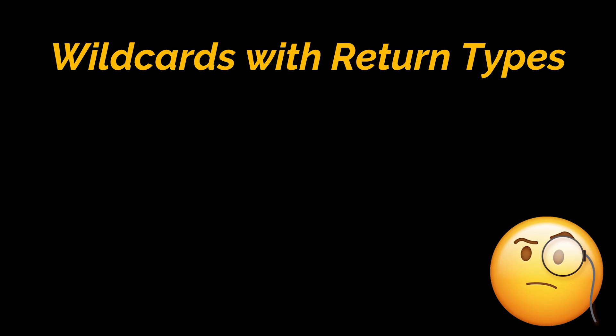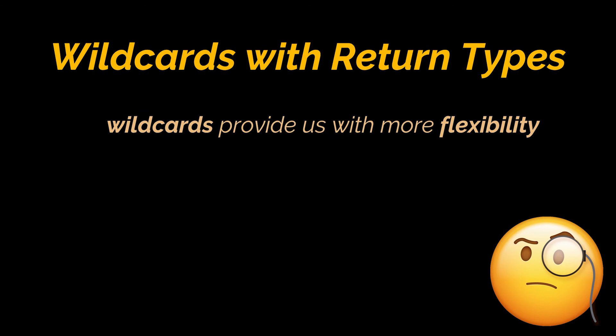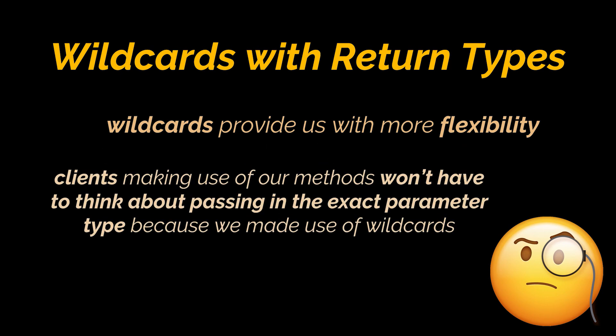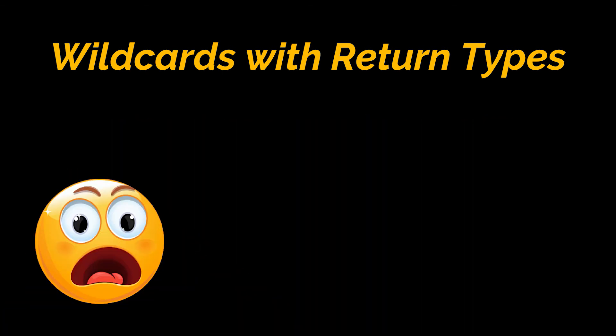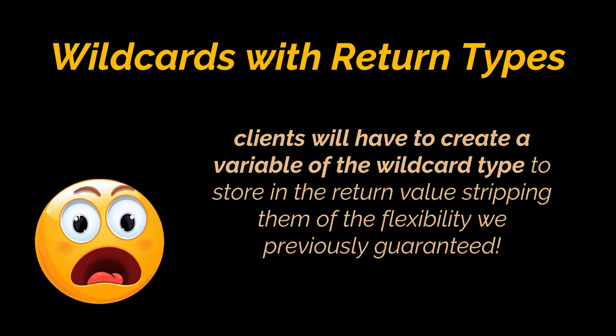Before ending, let's talk about return types. You may have noticed that in all examples, bounded wildcards were only used as method parameters, never as method outputs. We use wildcards to make our APIs more flexible — clients shouldn't have to think about wildcards. But if we return wildcards, the caller must create a variable of the wildcard type to store the return value, which strips the flexibility we intended to grant and makes the API harder to use.